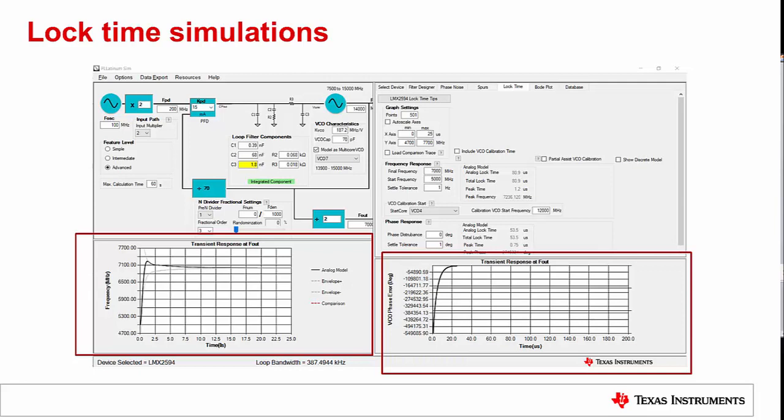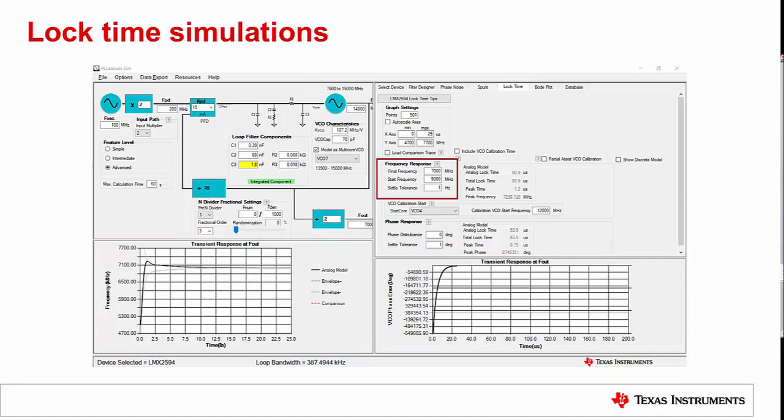The bottom section contains two graphs. The graph on the left plots the VCO frequency over time, which settles to the final frequency targeted. The graph on the right plots the change in phase error over time, which settles to zero.